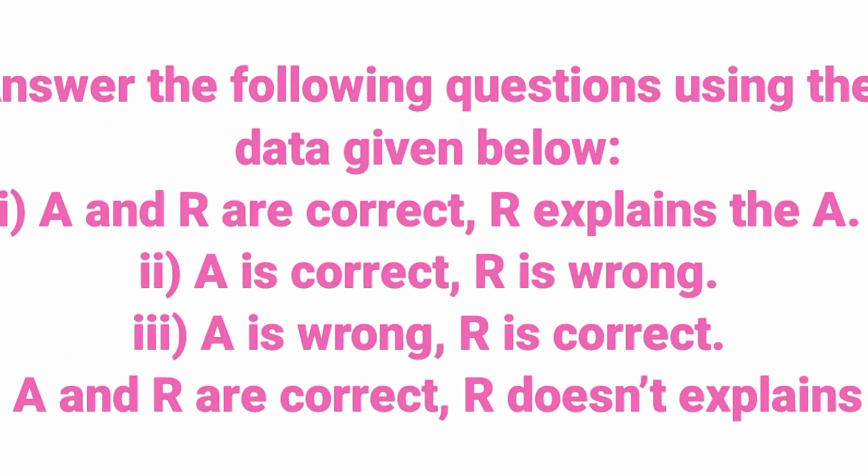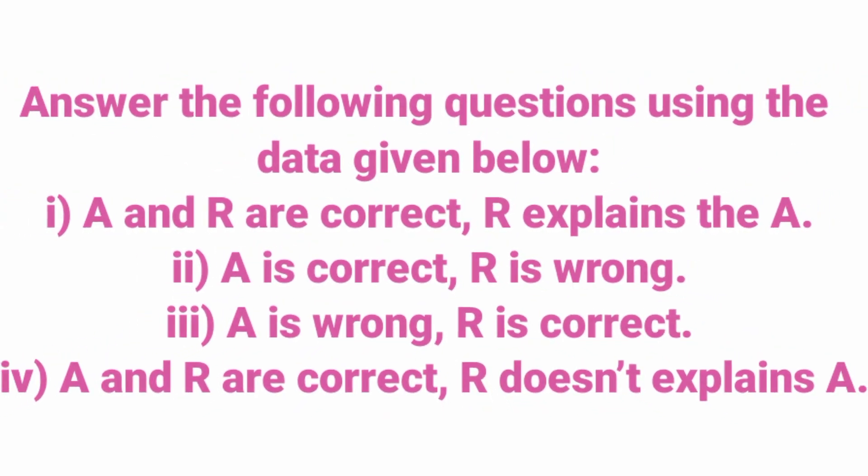Assertion and reason questions. Make a choice as: option A, A and R are correct and R explains A; option B, A is correct, R is wrong; option C, A is wrong, R is correct; option D, A and R are correct but R doesn't explain A.